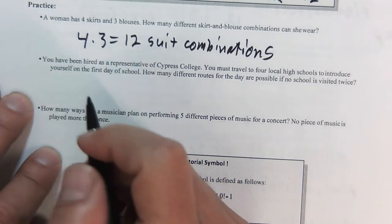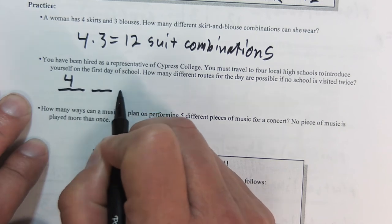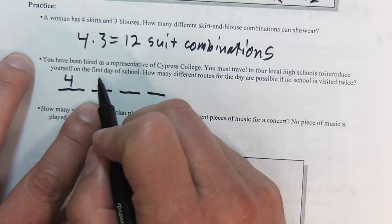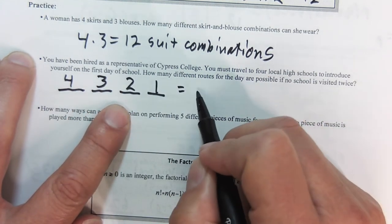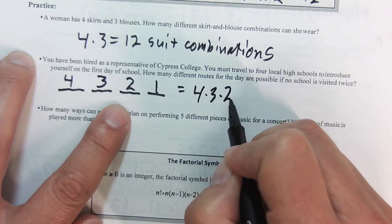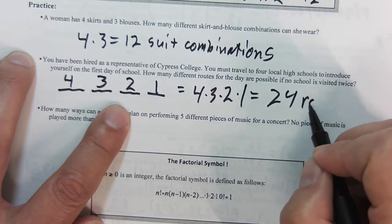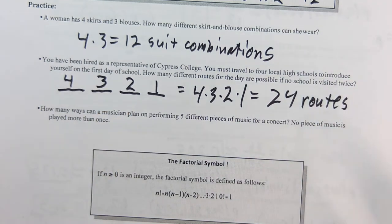When I'm at Cypress and I want to leave, initially I have four choices. But after I've made the one choice, after that I now have three choices. And after that, I have two choices, and then one choice, which gives us 4 times 3 times 2 times 1, which is 24 routes.